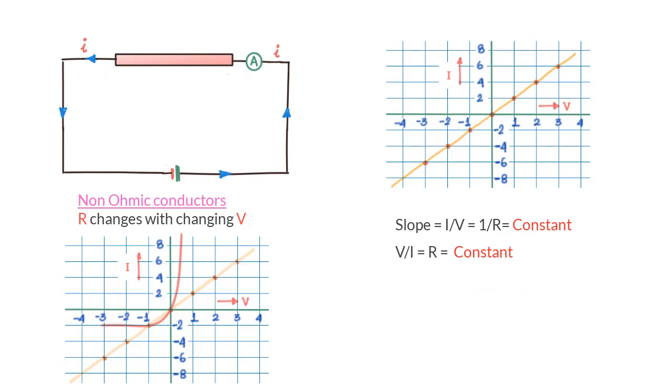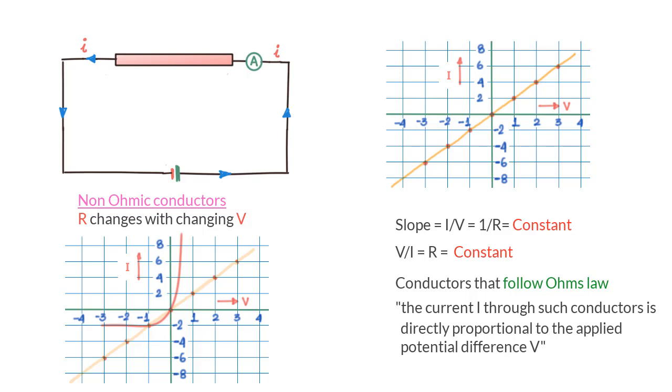To wrap up this topic, we can say that for conductors that follow Ohm's law, Ohm's law states that the current I through such conductors is directly proportional to the potential difference V applied to the conductor.